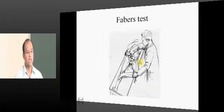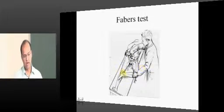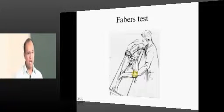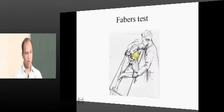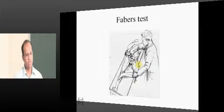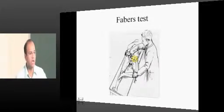Next is the FABER test, also called Patrick's test. FABER stands for Flexion, Abduction, and External Rotation — flexion of the knee and hip, abduction and external rotation of the hip. You stabilize the pelvis by pressing the opposite anterior superior iliac spine, then apply pressure on the knee downward. This opens the sacroiliac joint anteriorly, straining it. If there is inflammation of the sacroiliac joint, the patient will have extreme pain in the buttock at the sacroiliac joint area. This is a specific test for sacroiliac joint pathology.